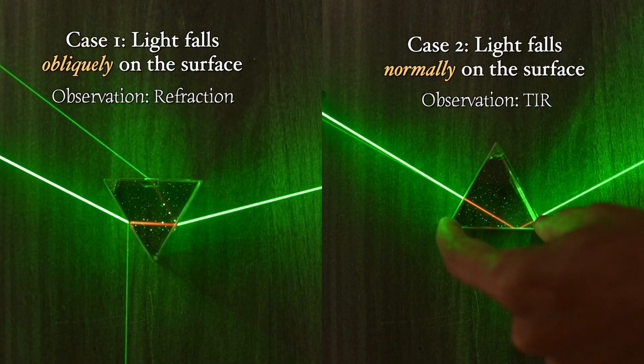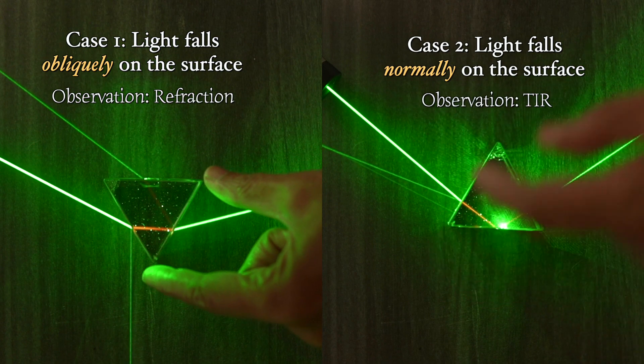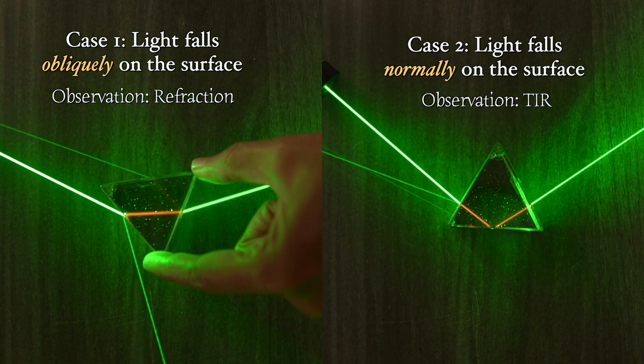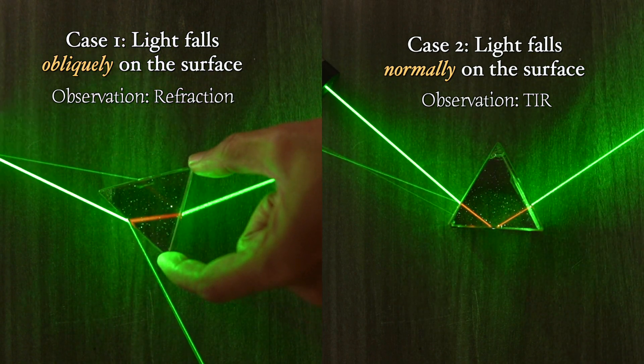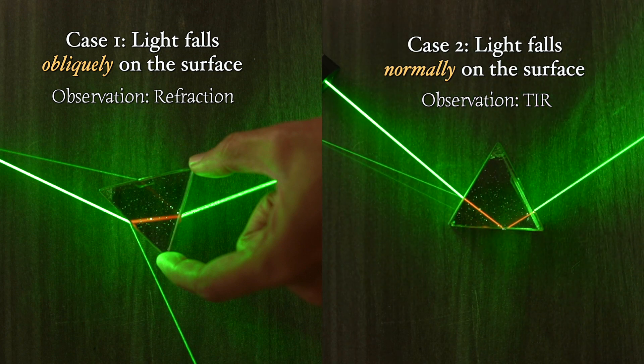In summary, when a ray of light falls obliquely on the surface of a prism and the angle is less than 90 degrees, we will observe refraction. On the other hand, when the ray of light falls normally on the surface, we will observe total internal reflection.